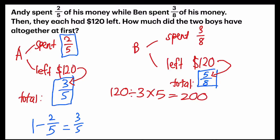Now let's move on to Ben. For Ben, he has $120 left as well, but that $120 is equal to 5 units. So I will divide by 5 to find one unit, and then I multiply by 8, and I will get the answer of 192.